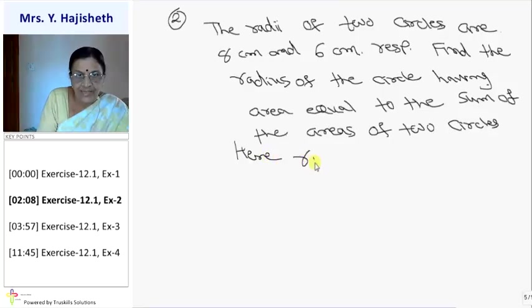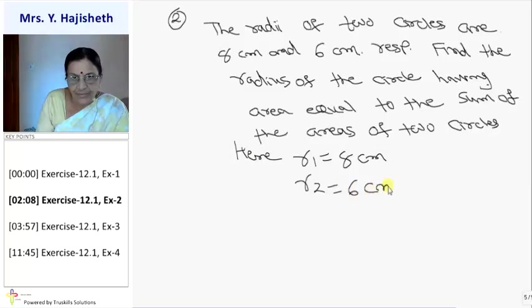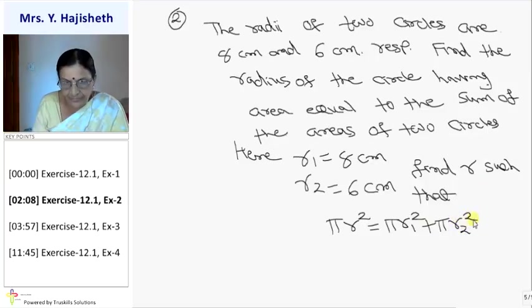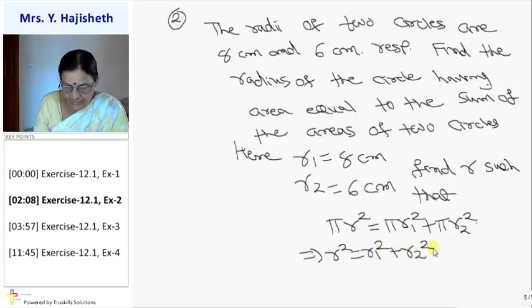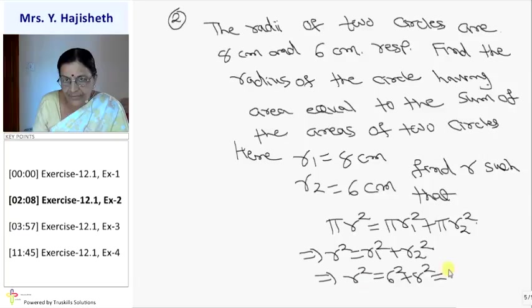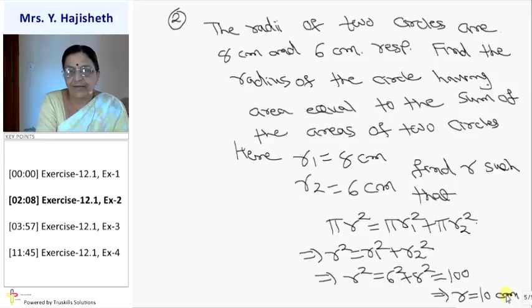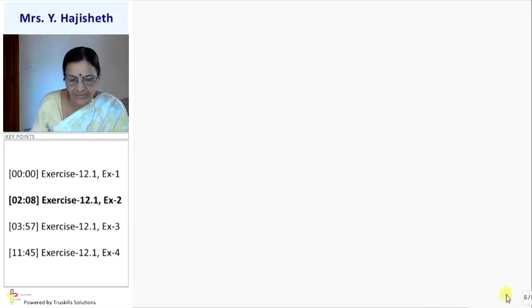R1 is 8 centimeter, R2 is 6 centimeter. You are asked to find R such that πR² = πR1² + πR2². This implies R² = 6² + 8² = 100. So R will be 10. Radius of required circle is 10 centimeter.